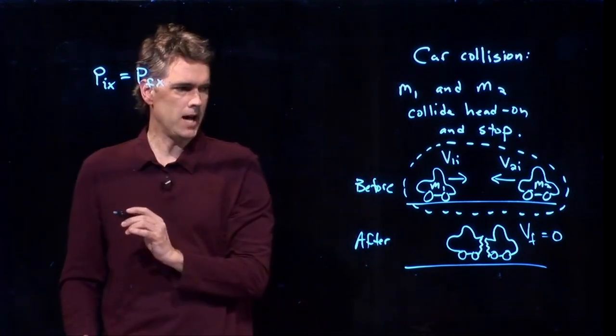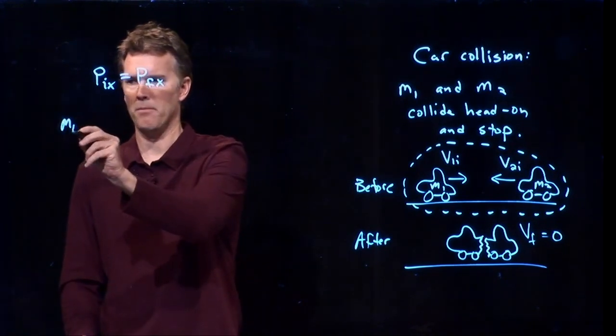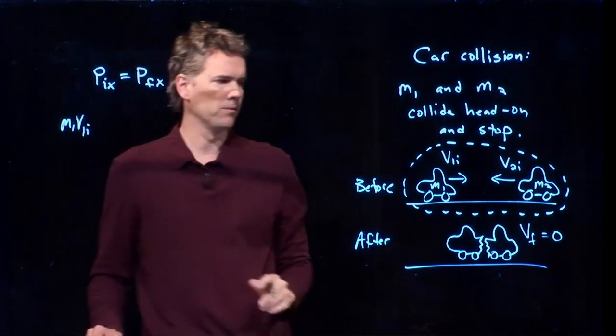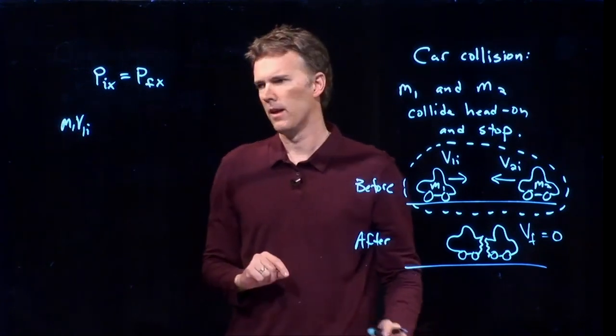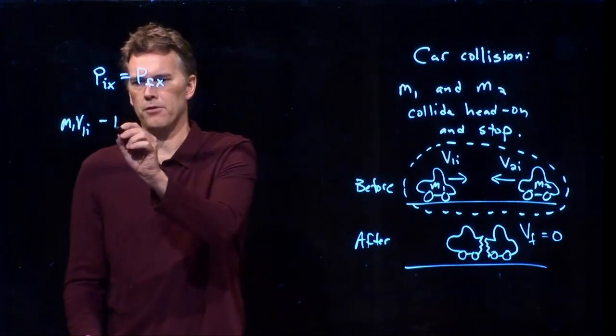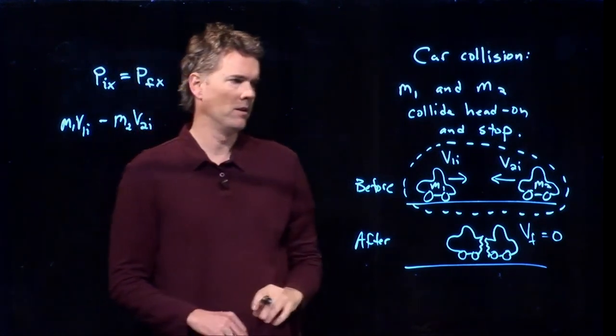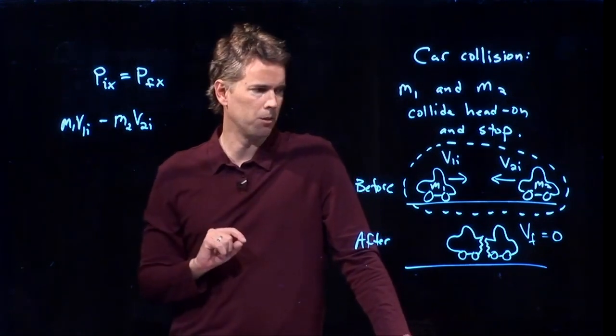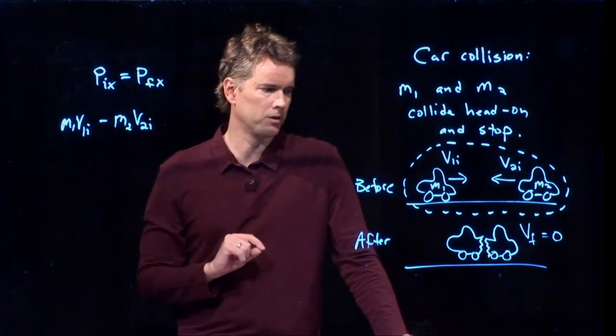P initial in the x is consisting of two quantities. We have mass 1 times velocity 1, which is positive—it's going to the right in our picture. And then we have mass 2 times velocity 2, and that one we put a negative sign on because it's going to the left in our picture.